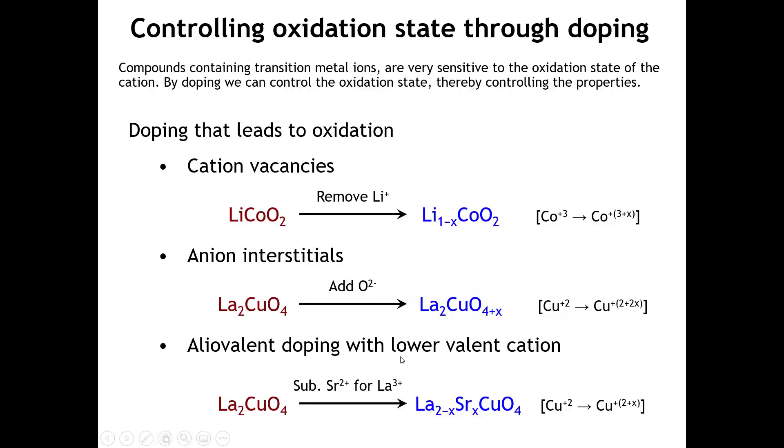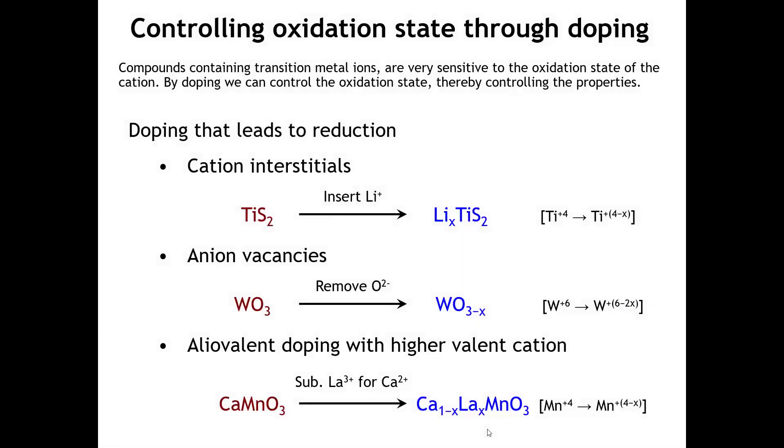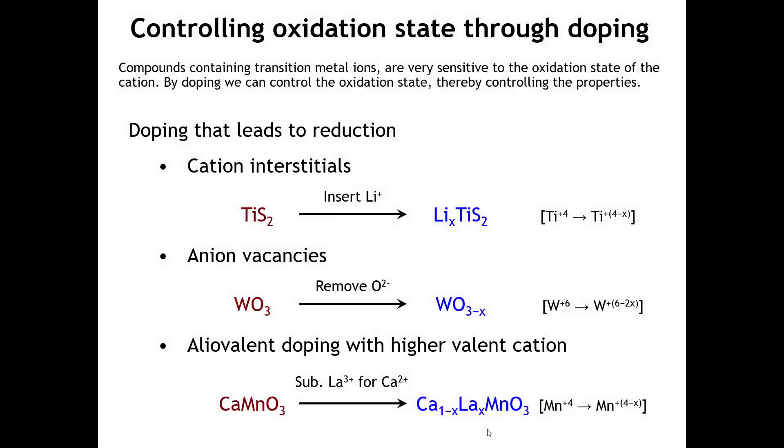Another way of achieving the same thing is to do aliovalent doping where we substitute a lower-charged cation for the lanthanum. For example, if we put in strontium for lanthanum, because strontium is only 2-plus, that has basically the same effect—it increases the copper oxidation state. In fact, this was the way that Bednorz and Mueller first discovered superconductivity in the cuprates.